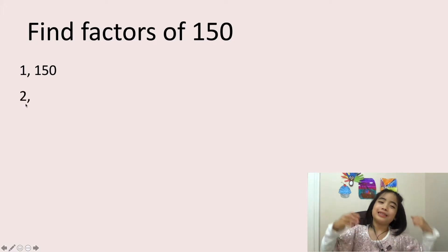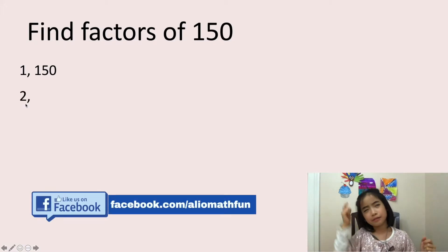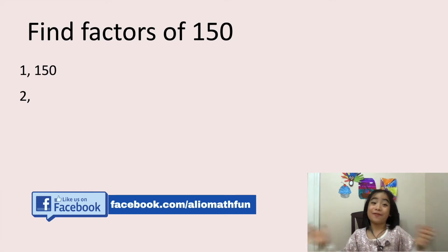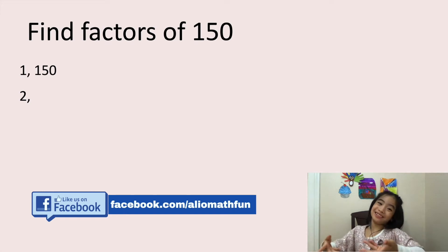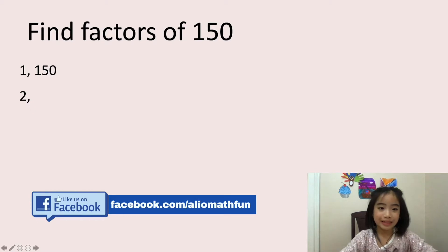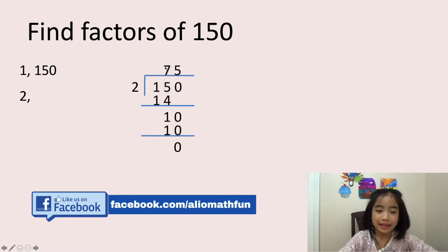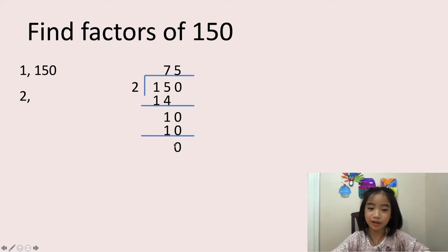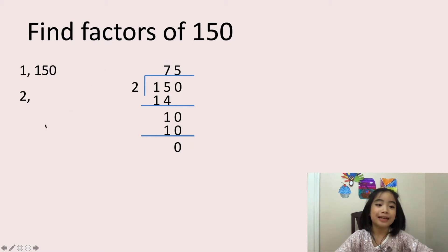Now, is 2 a factor of 150? Well, factors always come in pairs — they are called factor pairs. So 2 is definitely a factor of 150. Now let's verify this. Here is my long division, and as you can see, 150 divided by 2 equals 75 with no remainder. So the other factor is 75. Let's write 75 here.